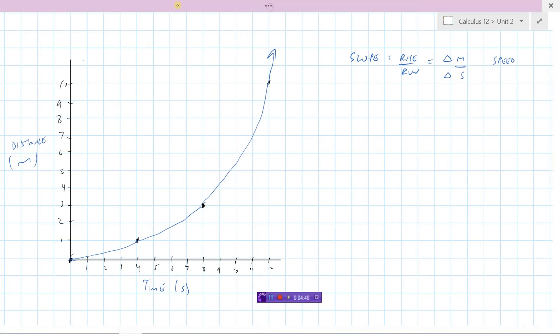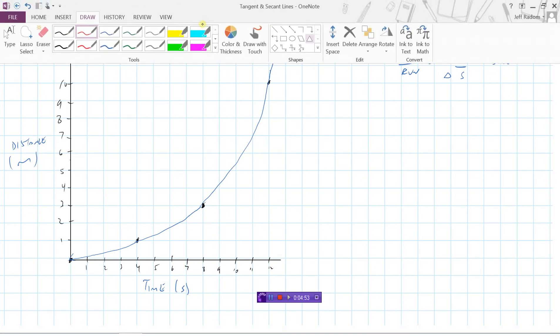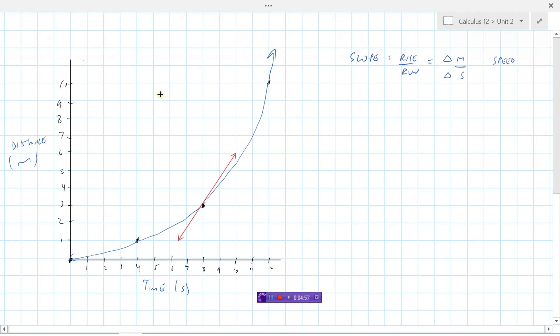Let's look at the secant line. Let's make that red and I'll try to get it in these two points here. Okay so here's a secant line. That's a line, remember, that goes through the two points.